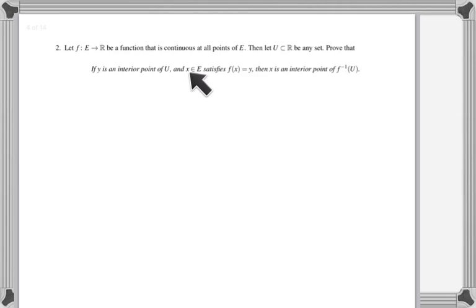then any time we have an interior point of a set U, its pre-image, so any point x that satisfies f of x is equal to y, will be an interior point of the inverse image of U. This is the key ingredient in proving that continuous functions have the property that the inverse image of open sets are always open sets.